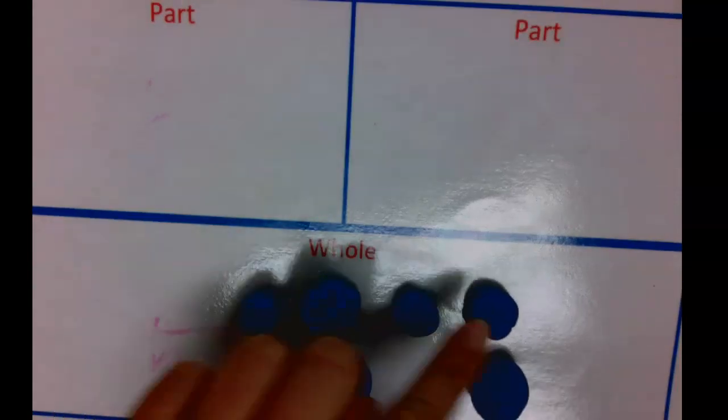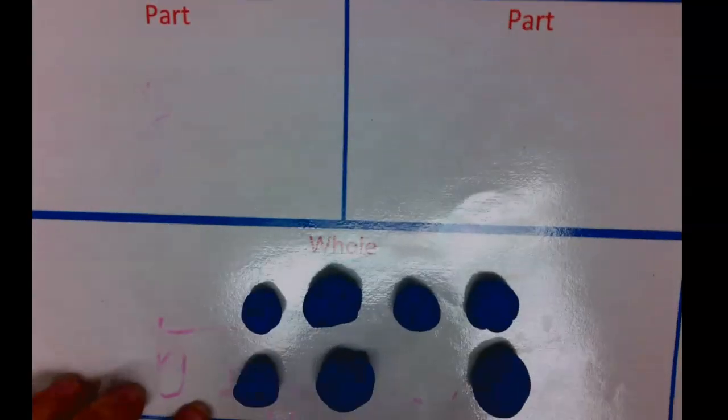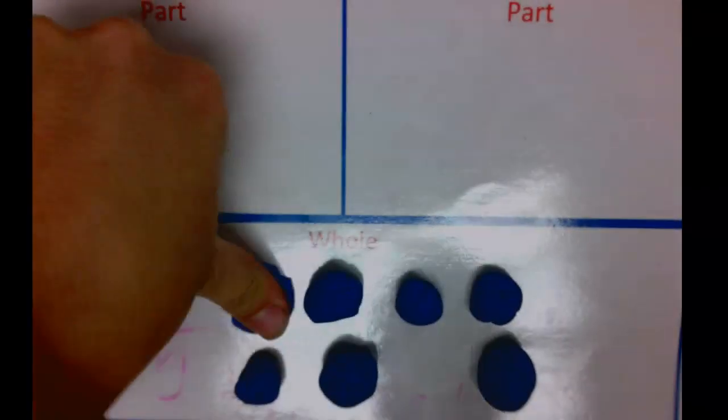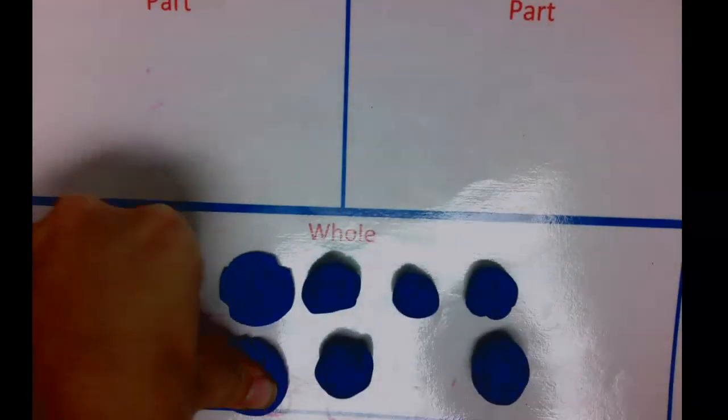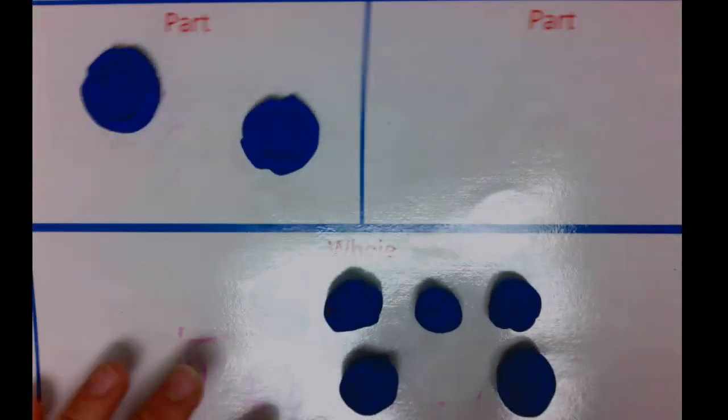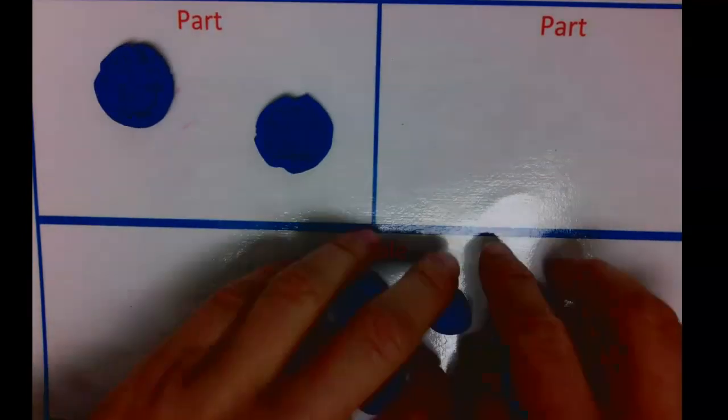Let's say we are going to cross out two. I'm going to smash two pieces of play-doh. Now I'm going to move them up to my part and I'm going to move my other ones over to the opposite part.